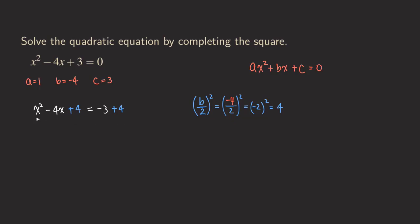Once we do that, the left side becomes a perfect square, which we can write in factored form as a quantity squared. There's a nice trick: whatever is inside the parentheses from our calculation — negative two — is what we put here. So the left side becomes x minus two, squared. The right side is easy: four minus three equals one. So we get x minus two squared equals one.